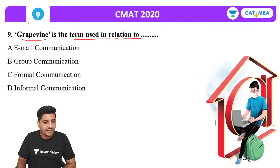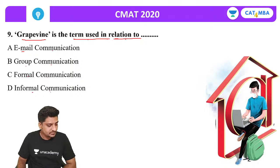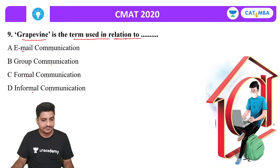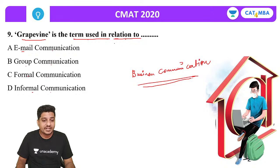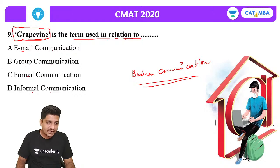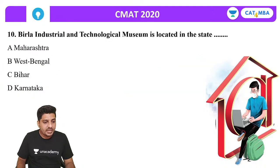Next question: Grapevine is a term used in relation to which type of communication? The options are email communication, group communication, formal communication or informal communication. This is from the business communication section — a topic familiar to commerce graduates and BBA students. The correct answer is informal communication.